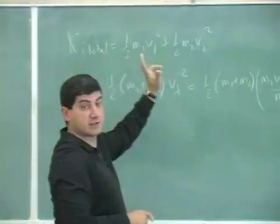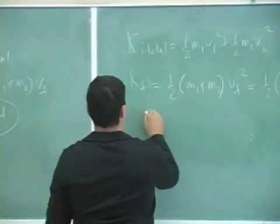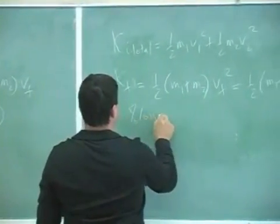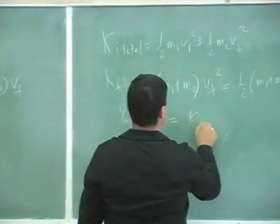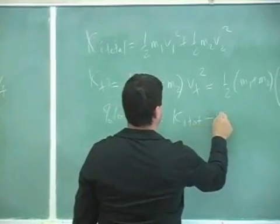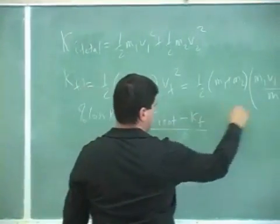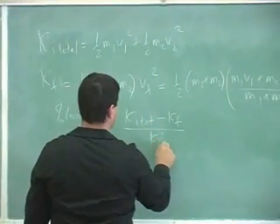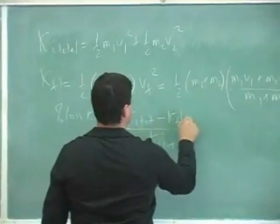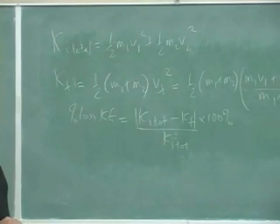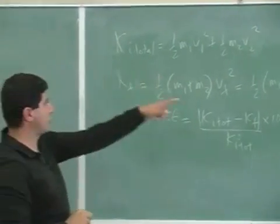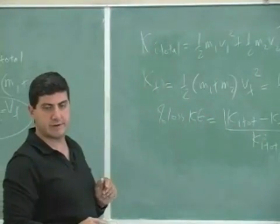And to get the percent loss of kinetic energy, you get the kinetic initial total minus kinetic final total, divided by kinetic initial total times 100%. So you subtract them and divide by the initial.